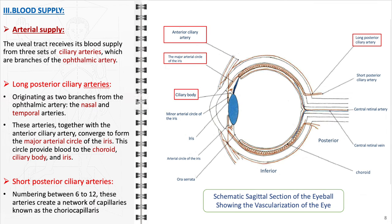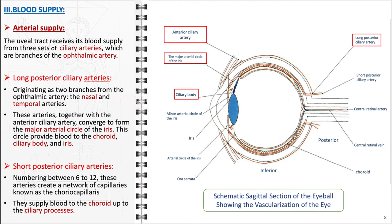The short posterior ciliary arteries, numbering between 6 to 12, branch out from the ophthalmic artery and create a network of capillaries known as the choriocapillaris, which is essential for supplying the choroid up to the ciliary processes.